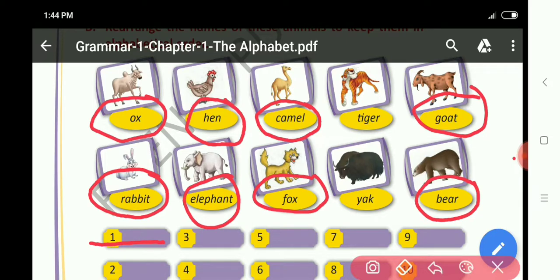Number nine: T, I, G, E, R. Tiger. Tiger: T, I, G, E, R. Tiger.